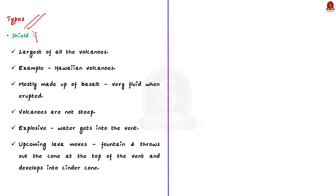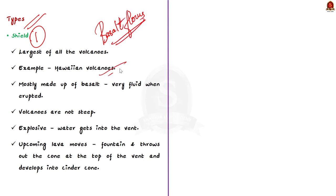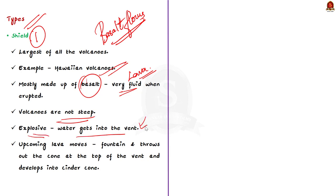The first type is shield volcanoes. The shield volcanoes bearing the basal flows are the largest of all the volcanoes on the earth. The Hawaiian volcanoes are the most famous ones. These volcanoes are mostly made up of basalt, a type of lava that is very fluid when erupted. For this reason, these volcanoes are not steep, and they become explosive only if somehow water gets into the vent. Otherwise, they are characterized by low explosivity. The upcoming lava moves in the form of a fountain and develops into a cinder cone.